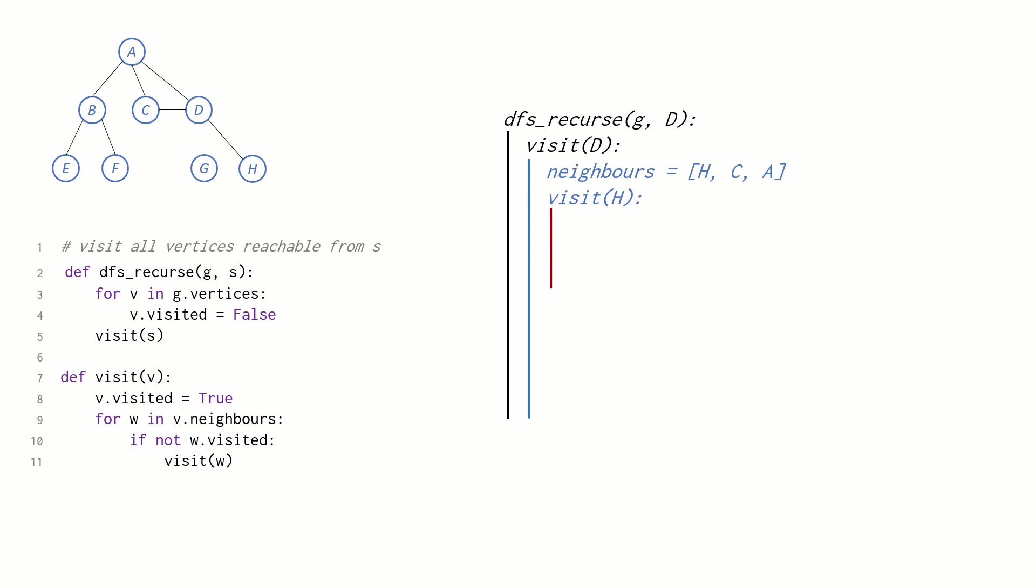H hasn't been marked as visited, so we'll call visit on H. H gets marked as visited, line 8, and then we get a list of H's neighbours, line 9. H only has one neighbour, namely D. We note that D has been marked as visited, so we don't need to do anything. And so the call to visit H has finished, and so we return from it.